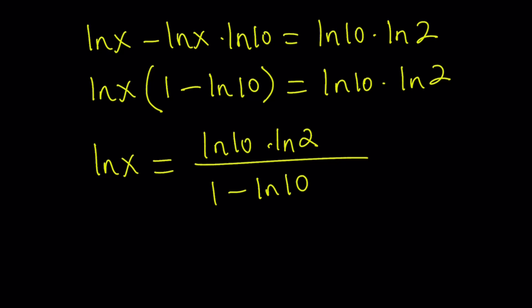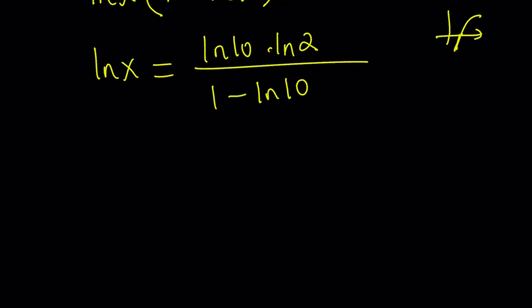Like, x cannot be negative in this case, but ln x can definitely be negative. Because if you think about the graph of ln, part of it is actually under the x-axis. So, I got ln x. I'm almost there. How do I get x from here?